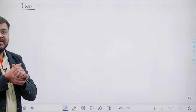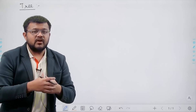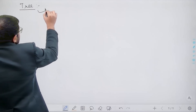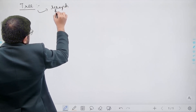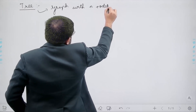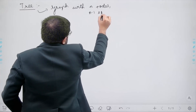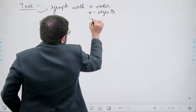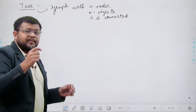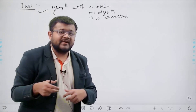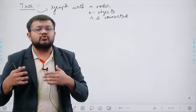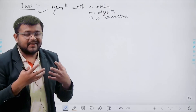So what are trees? Trees are basically graphs which contain n nodes and n minus 1 edges, and it is also connected. So a tree is a special type of graph with n nodes, n minus 1 edges, and it is connected.